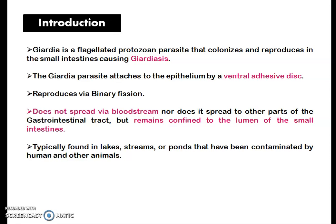Giardia attaches to the intestinal epithelium with the help of a ventral adhesive disc and reproduces by binary fission. One important feature of this parasite is that it does not spread through the bloodstream, and so it does not spread to other parts of the gastrointestinal tract.